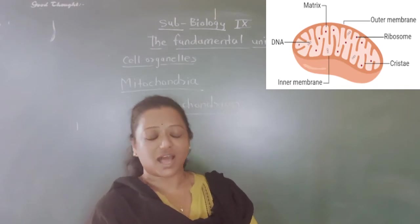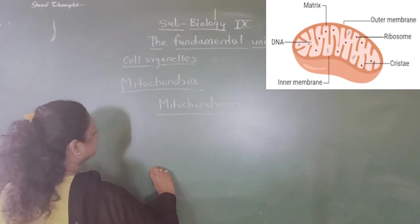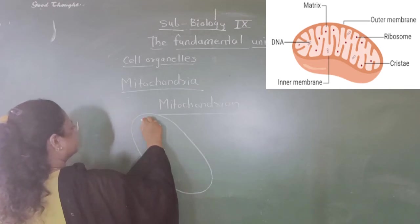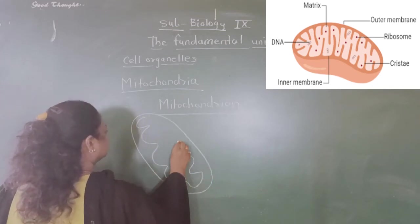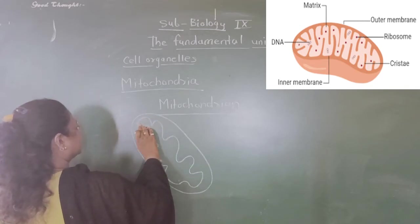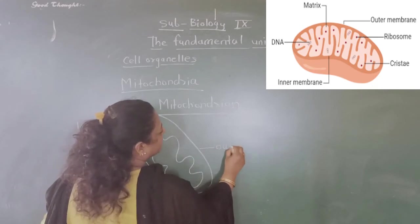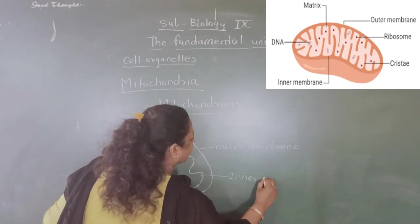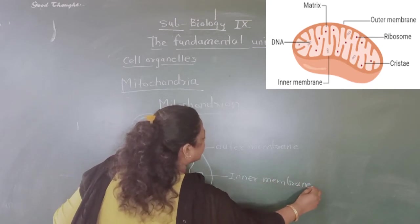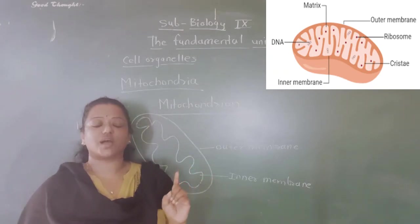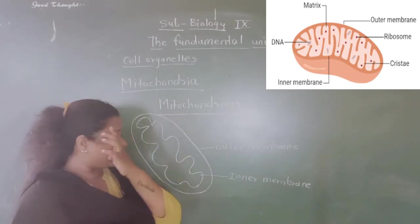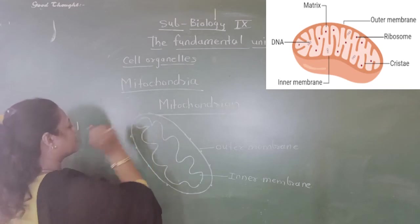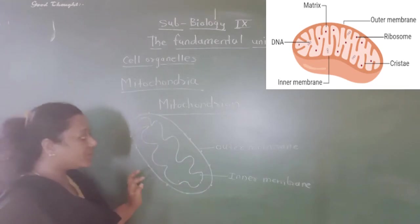Now what is this mitochondria and how is the structure designed? I shall draw a figure for you. This is the outer membrane of the mitochondria, and this is the inner membrane of the mitochondria. So mitochondria has two membranes. The outer membrane is a plain membrane and it has small pores on it.